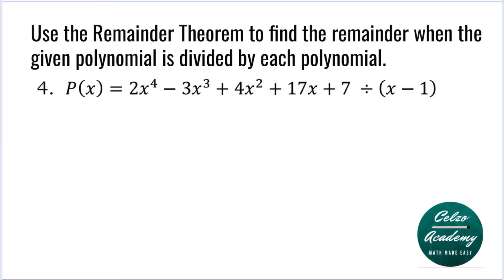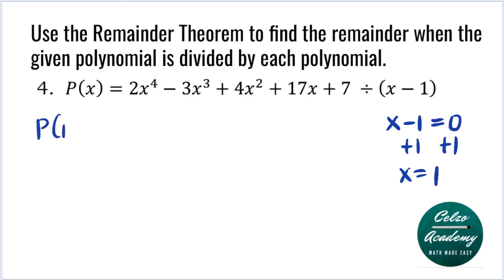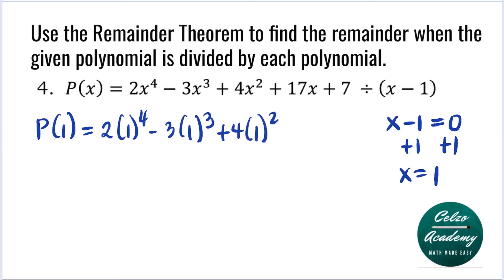Question 4: P of X is equal to 2X to the fourth minus 3X cubed plus 4X squared plus 17X plus 7, divided by X minus 1. Our X value here is 1, because X minus 1 equals 0, and adding 1 to both sides gives X equals 1. So let's evaluate P of 1. Substituting 1 for X: 2 times 1 to the fourth, minus 3 times 1 to the third, plus 4 times 1 squared, plus 17 times 1, plus 7.